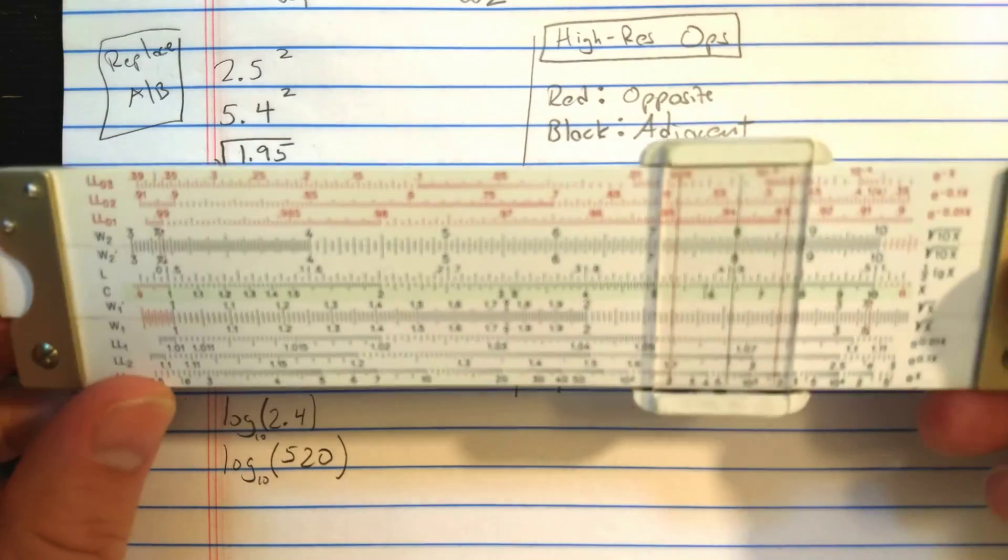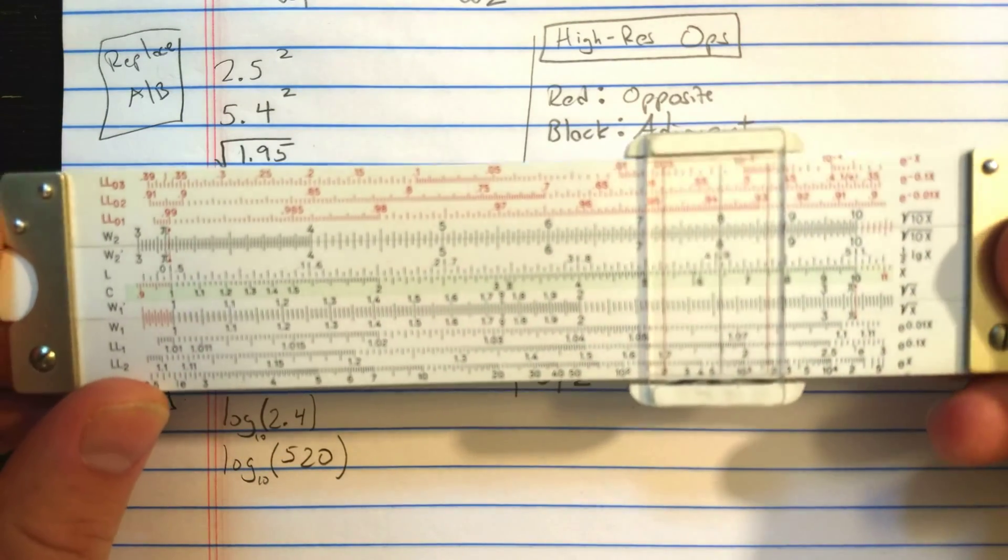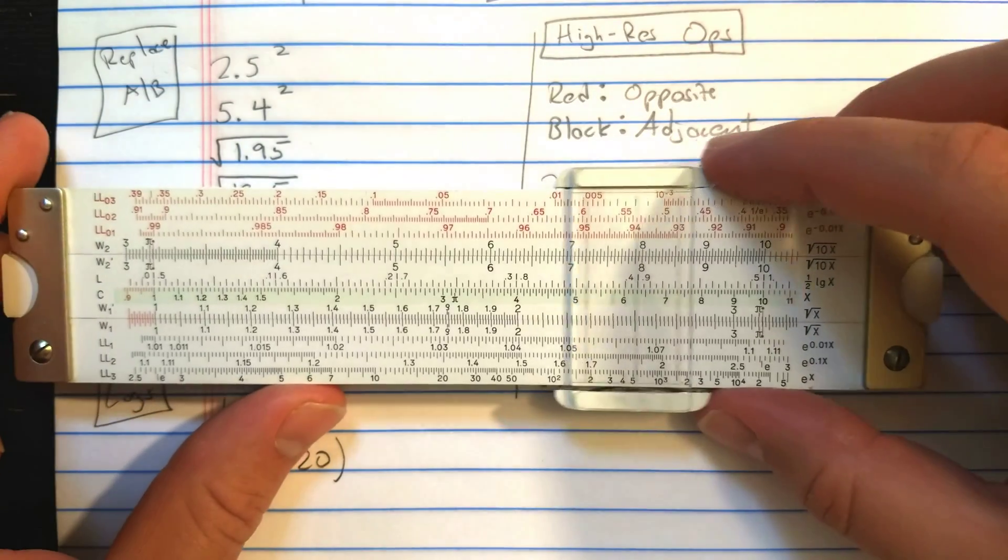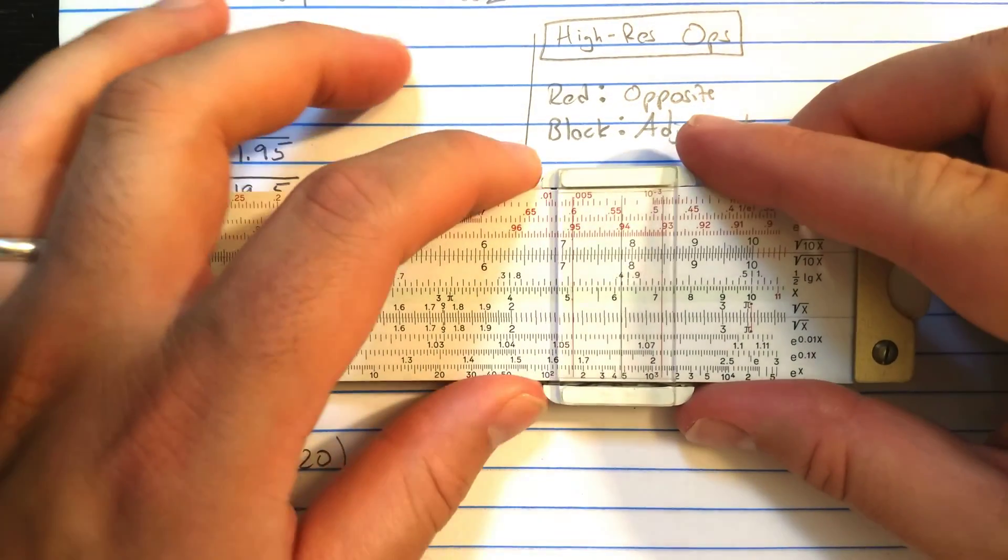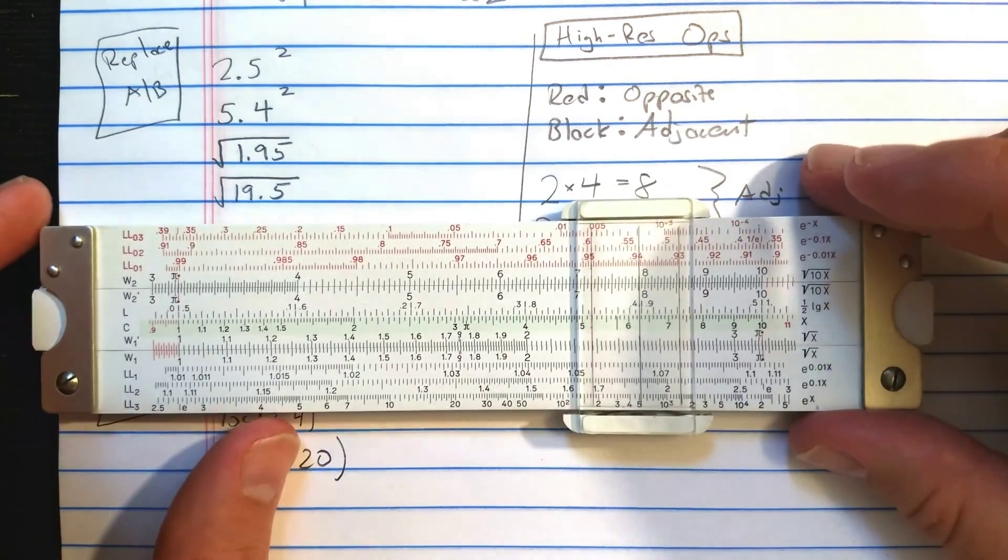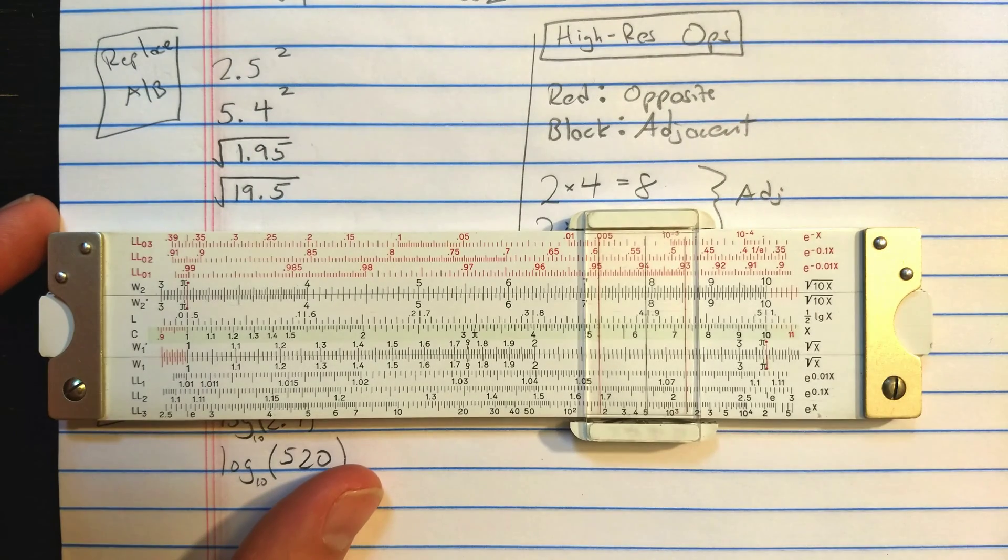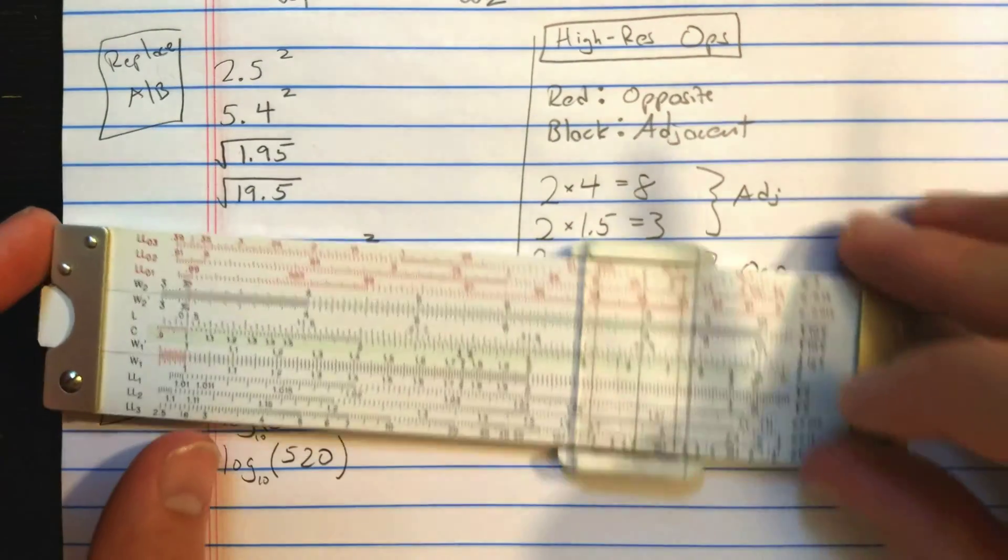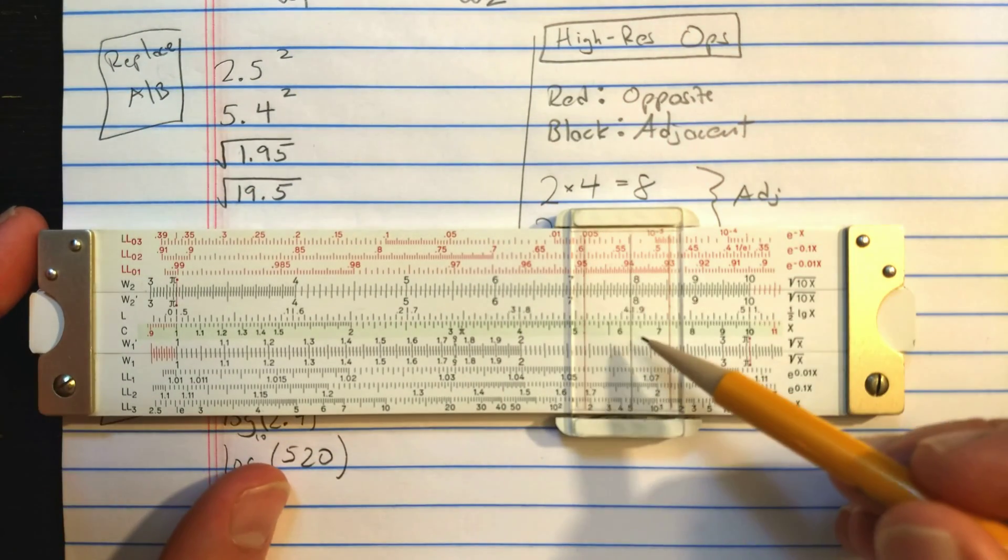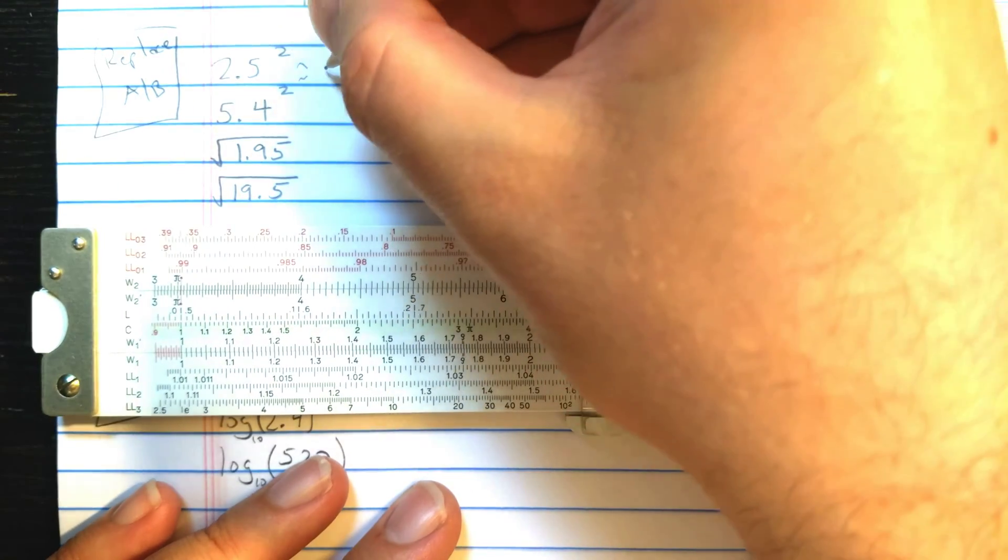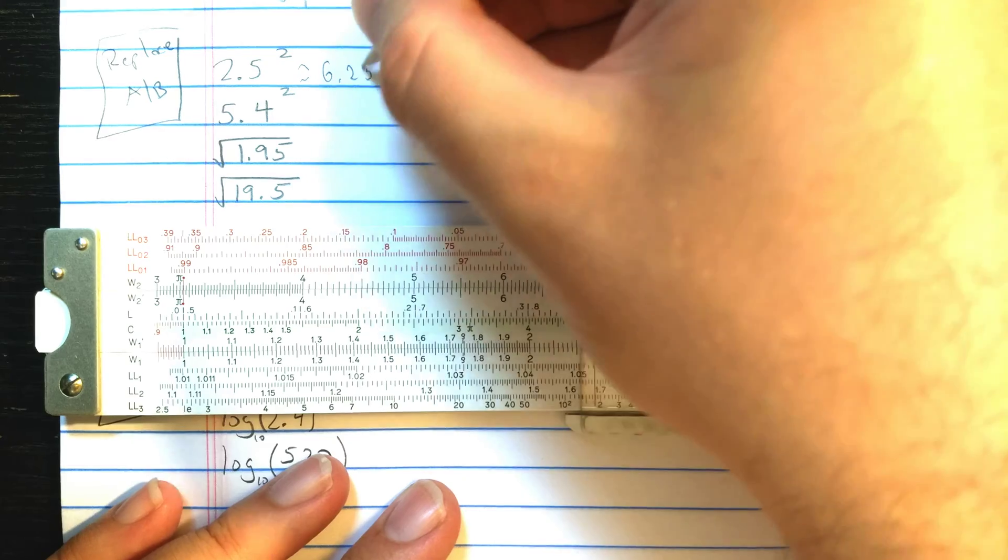So let's close the rule here. To compute 2.5 squared, I'm going to find 2.5 on W1. Every number appears once, either on W1 or W2. Now, the W scale is twice as long as the C scale, so I'm going to read the result on the C scale here. You can read it on the back side on D also, but I'll read it on C here. 625. We know that's exact.